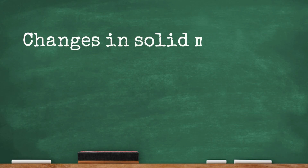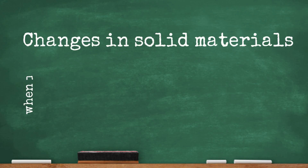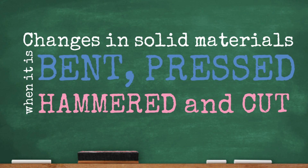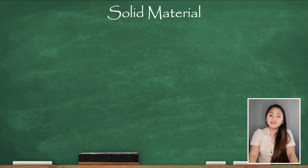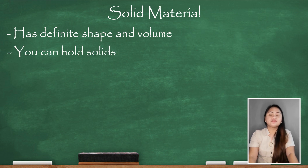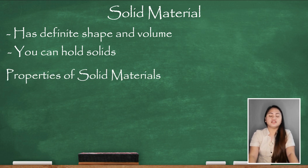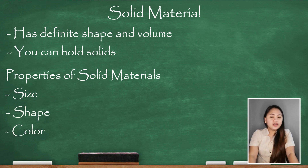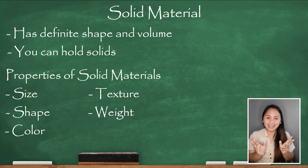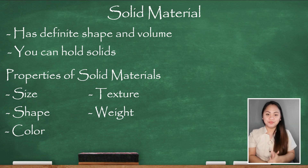Our lesson for today is all about changes in solid materials when they are bent, pressed, hammered, and cut. So what is a solid material? A solid has definite shape and volume. Solids have different characteristics or properties such as size, shape, color, texture, and weight. Solid materials are things we can hold — they have an exact shape, weight, and color. Everything we can touch are solid materials.